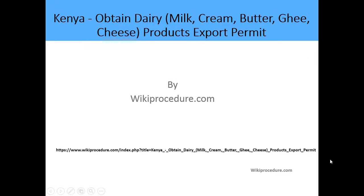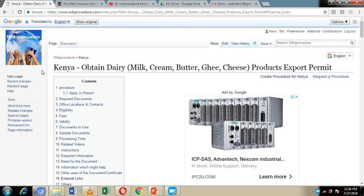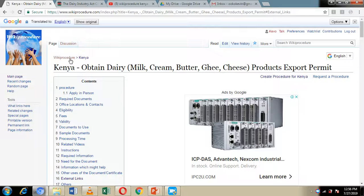Hello, welcome to another WikiProcedure video. Today we are going to look at how you can obtain a dairy product export permit in Kenya. Below we have given you a link which will direct you to our WikiProcedure website page where we have provided detailed information on how you can go about the application process.